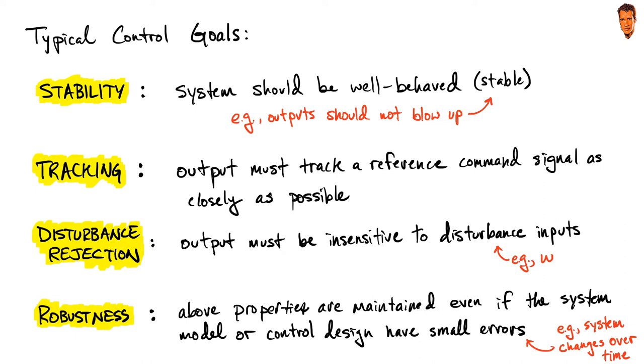Now that we're able to compose closed-loop transfer functions and consolidate a block diagram into a more condensed direct input-output relationship, we're ready to revisit our four fundamental control goals: stability, tracking, disturbance rejection, and robustness, now in the context of closed-loop control and closed-loop response.